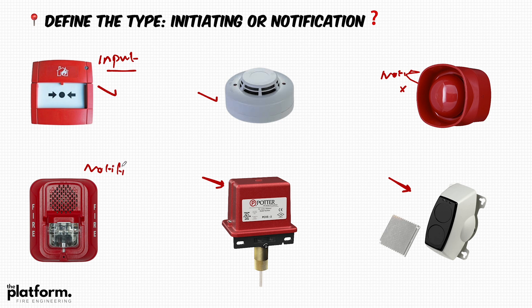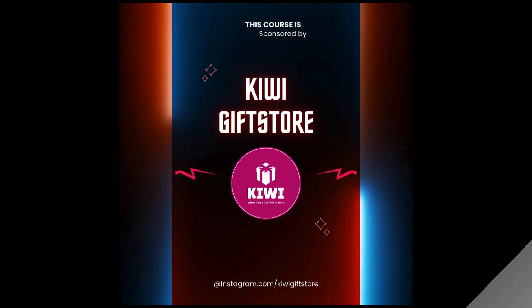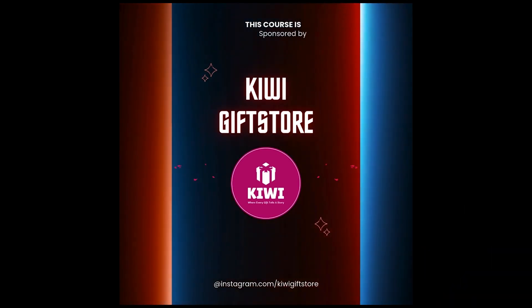It is important to know the device type. Now we move to the initiating devices in more detail. We start with the first type: the smoke detector. The smoke detector here does not mean only the spot type — we are talking about different types of smoke detection, which we will look into right now.